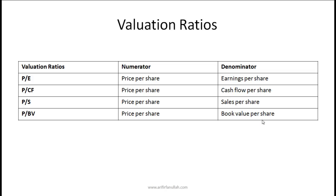Finally, valuation ratios: price-to-earnings is price per share divided by earnings per share; price-to-cash-flow is price per share divided by cash flow per share; price-to-sales is price per share divided by sales per share; and price-to-book value is price per share divided by book value per share. These will be covered in detail in the equity section. This reading is extremely important — every reading in study session 8 has a segment on ratios, and this reading consolidates many of them. The curriculum has many good questions, so make sure you practice thoroughly.